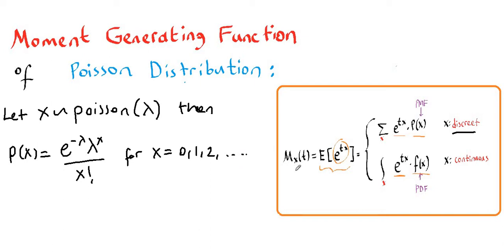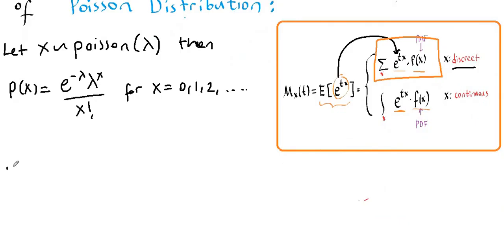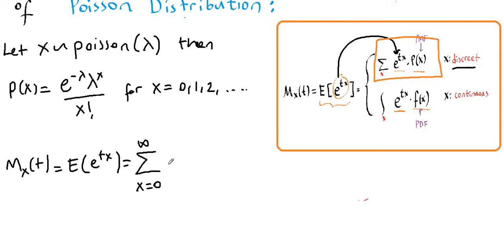The moment generating function by definition equals the expectation of e to the tX. Using the discrete definition, the expectation equals the argument times the mass function, summed over the support. So the moment generating function equals the sum of e to the tX times e to the negative lambda times lambda to the X over X factorial, from 0 to infinity.